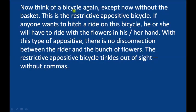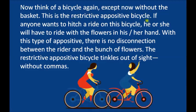Now think of a bicycle without a basket — this represents the restrictive appositive. If one wants to hitch a ride on this bicycle, he or she will have to hold the flowers in hand. With a restrictive appositive, there is no disconnection between the writer and the descriptive element — it stays attached without commas.